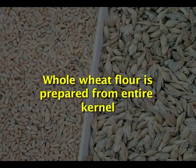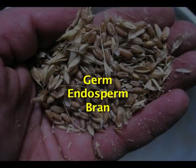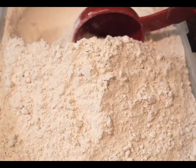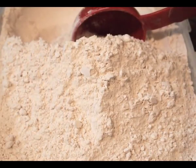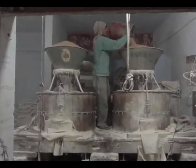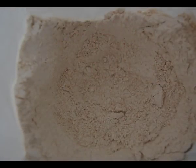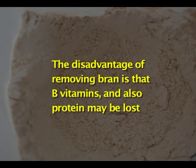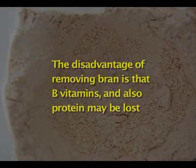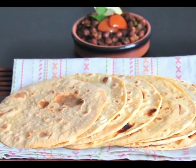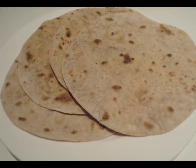Whole wheat flour is prepared from the entire kernel — germ, endosperm, bran, etc. are all pulverized in a mill. The disadvantage with whole wheat flour is that because it contains germ which has fat, it is liable to rancidity during storage. Commercially, sometimes the bran is removed before converting into whole wheat flour, and the disadvantage is that B vitamins and protein may be lost. Whole wheat flour lends itself to use in chapati making, a kind of tortilla which is famous in India.